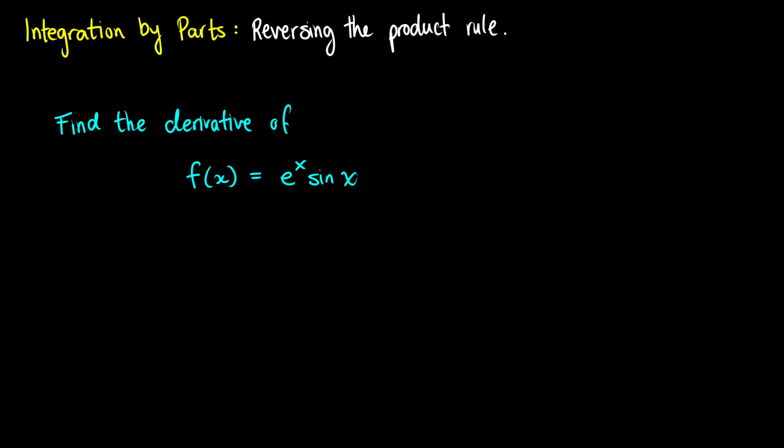In this video we're going to talk about integration by parts. This is reversing the product rule that you would have with derivatives. To start, I want to actually take a derivative so we can see how the product rule unfolds and then reverse it by integrating it. As a first exercise, let's find the derivative of f(x) = e^x · sin(x).